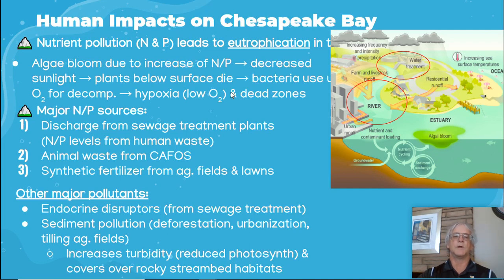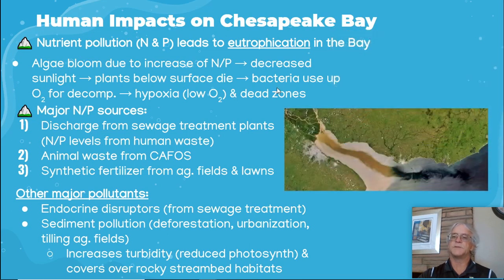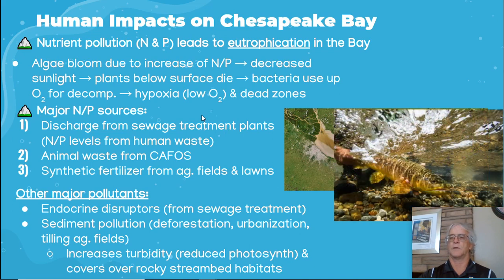Sediment causes turbidity — turbidity is how cloudy the water is. It's caused by too much sediment, which is caused by deforestation, urbanization, and agricultural fields. It increases turbidity, which reduces photosynthesis. The sediment covers the stream beds, which means plants won't be able to pull in light. You can see here the huge amount of turbidity going first into the lake and then into the estuary.